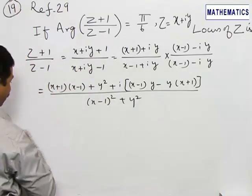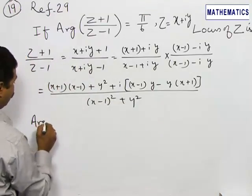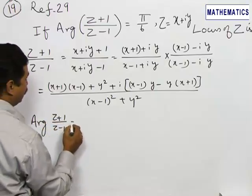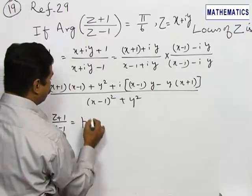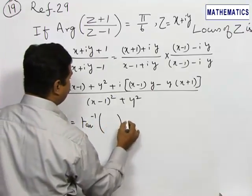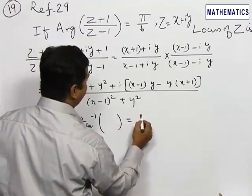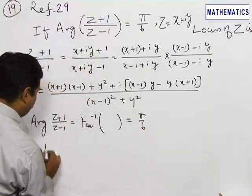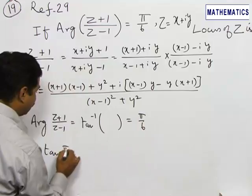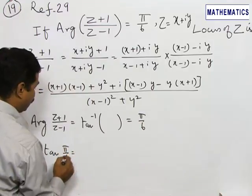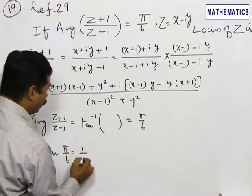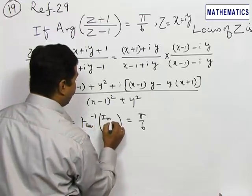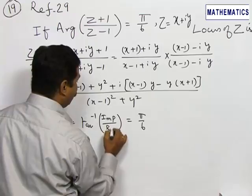It is given that the argument of (z+1)/(z-1) equals tan⁻¹ of the argument, which equals π/6. π/6 is 30 degrees; tan(π/6) = tan(30°) = 1/√3, which equals the imaginary part divided by the real part.